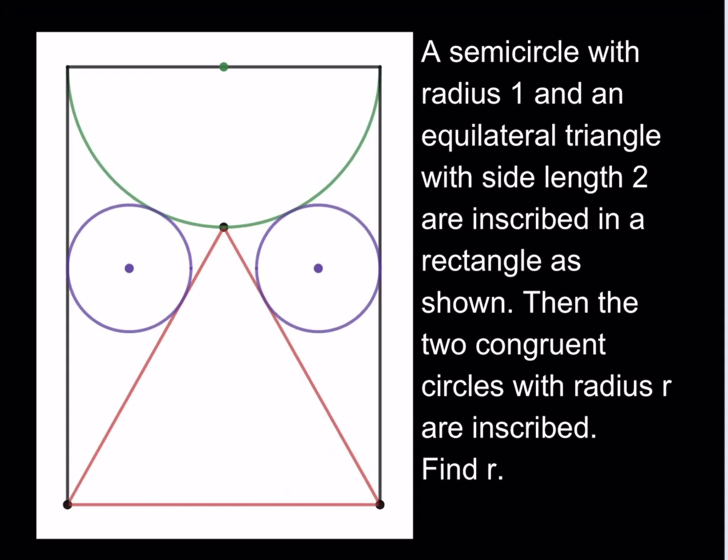Hello everyone. In this video we're going to be solving a geometry puzzle. A semicircle with radius 1 and an equilateral triangle with side length 2 are inscribed in a rectangle as shown. Then the two congruent circles with radius R are inscribed. Find R.